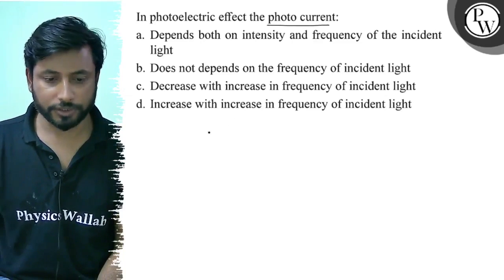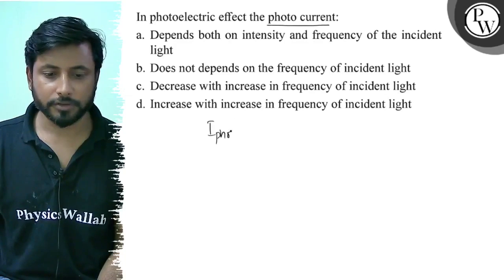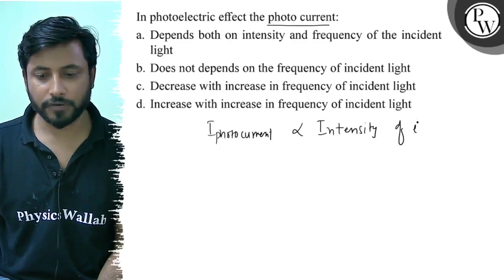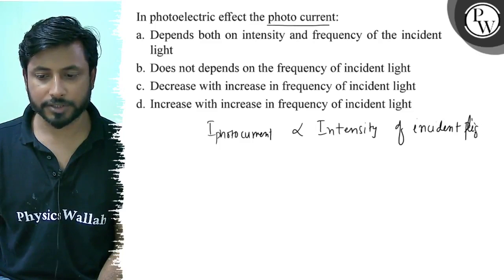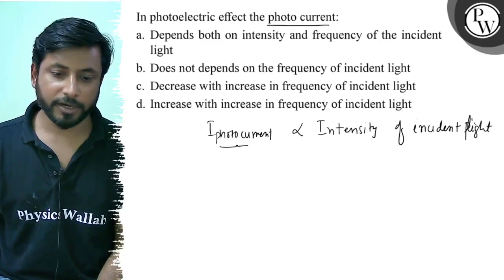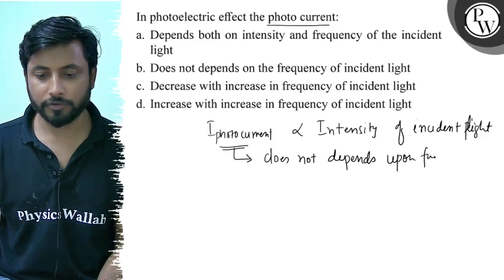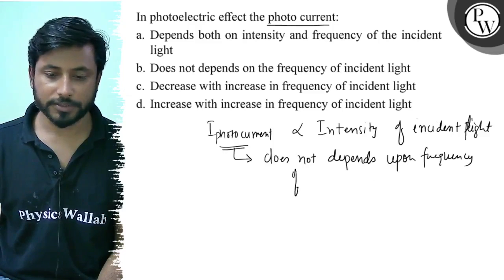The photo current only depends upon intensity — only depends upon intensity of incident light. Because it does not depend upon frequency of incident light.